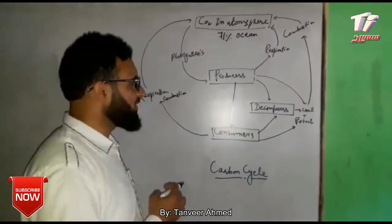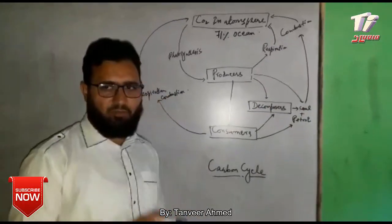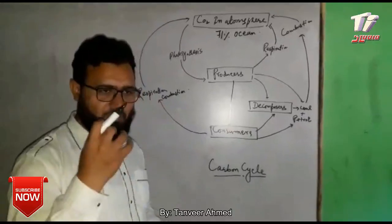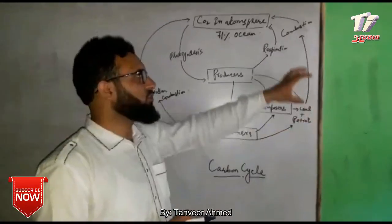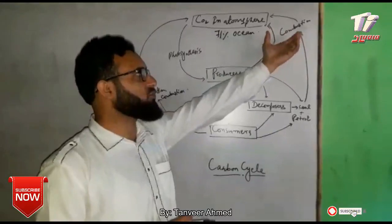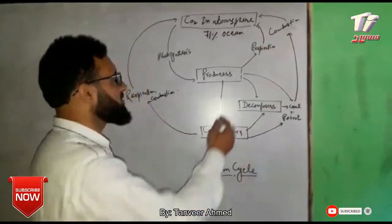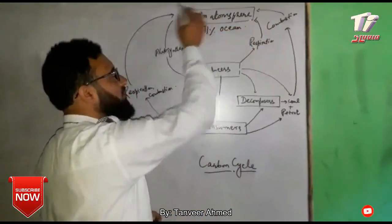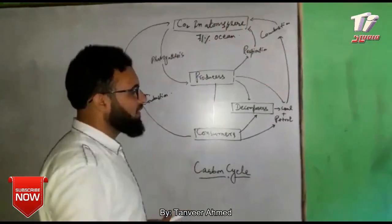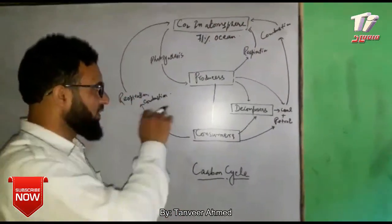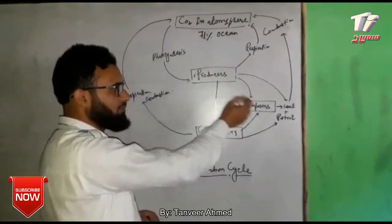When producers do not create another chemical thing, they become a chemical — this is the fuel. When producers decompose, it means that the fuel can generate carbon dioxide.